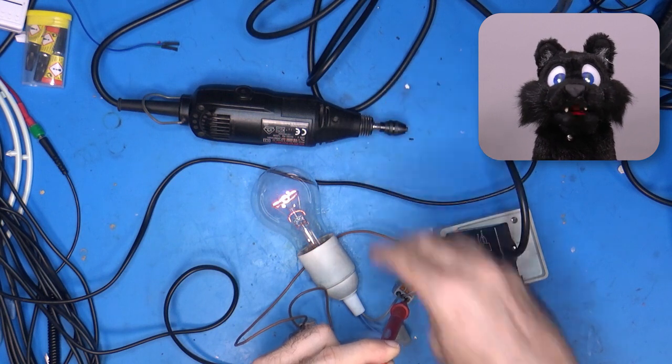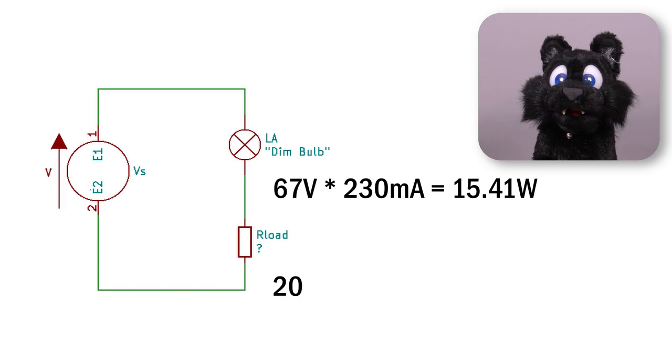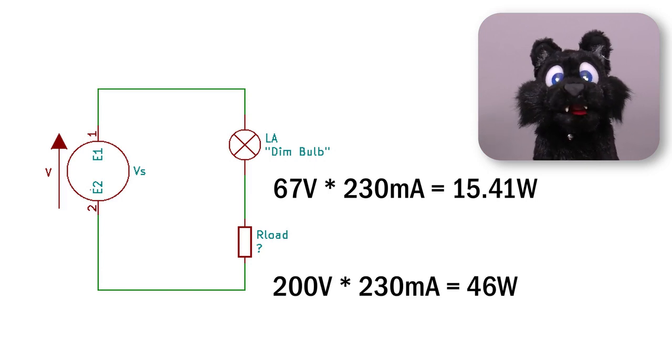Now we have a higher resistance in the bulb and a lower in the Dremel. That gives us a total current of 230 milliamps and 67 volts on the bulb, leaving about 200 volts on the motor. So we have 15 watt on the bulb and 46 watt on the Dremel.